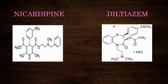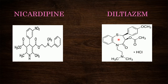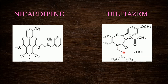Diltiazem is the third class drug — a benzothiazepine. The benzene ring is fused with thiazepine, which is a seven-membered ring containing two heteroatoms, sulfur and nitrogen. At the third position a methyl ester is attached, at the second position there is a methoxyphenyl ring, at the fourth position a carbonyl group is present, and at the fifth position an ethylamino group is present to which a dimethylamino group is attached. That is the structure of diltiazem.